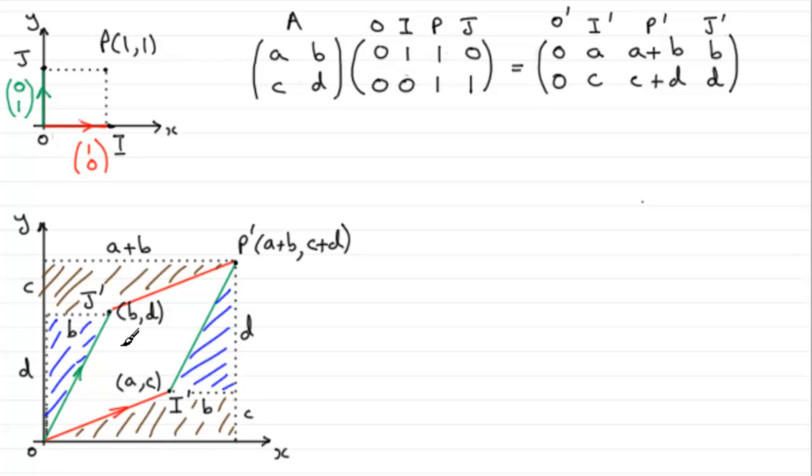So when it comes to working out the area of the parallelogram O, I prime, P prime, J prime, then all I've got to do is just work out the area of the rectangle around the outside, subtract then the area of the triangles and the two trapeziums. So let us just do that. We'll border this off. So we have the area of O, I prime, P prime, J prime. That area is going to be the area of the rectangle, which will be A plus B, one side, multiplied by the length of the other side, C plus D.